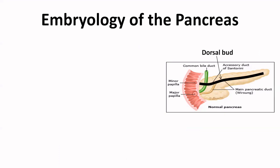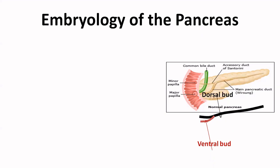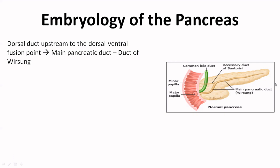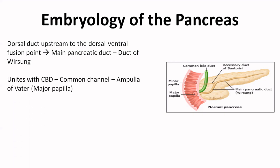The duct of the dorsal bud is represented by the black line and the ventral bud duct is the red line. As the two parts fuse, the major part of the dorsal duct joins with the ventral duct entirely, and this entire structure — the thicker yellow line — forms the main pancreatic duct or duct of Wirsung. The small remaining part of the dorsal bud may disappear or may remain and form the accessory duct of Santorini. Dorsal duct upstream of the dorsal-ventral fusion point forms the main pancreatic duct or the duct of Wirsung.